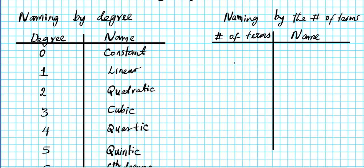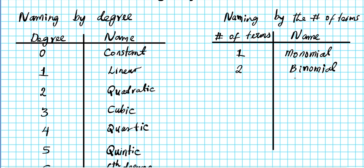A polynomial with one term is called a monomial. Think about words associated with 'mono' — like monopoly, where one company dominates a sector. 'Mono' means one. If you have two terms, you have a binomial. Think of 'bi' as meaning two — like bi-weekly meaning every two weeks, or bicycle which has two tires.